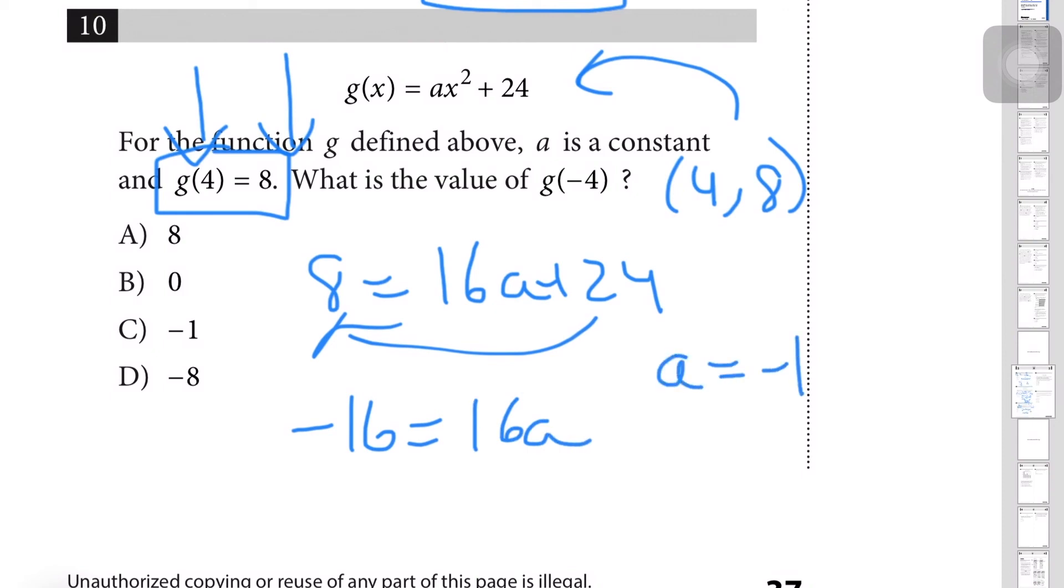Now that you know what a equals, you can bring it back into the original equation and now you can solve for what the question is asking for, which is g(-4). So g(-4) would just be (-4)² times -1 + 24. Since this would just be 16, because anything in the square would just be positive, 16 times -1 which would be -16 + 24. -16 + 24 would be 8, positive 8, so that gives you A.